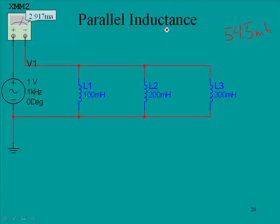We could redraw this circuit now with our signal source and an inductance of 54.5 mH. This is a 1 volt source at 1 kHz.